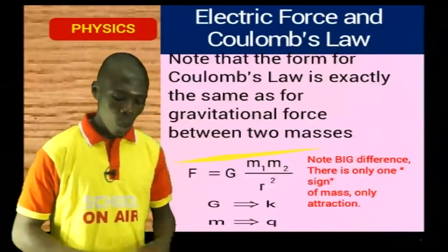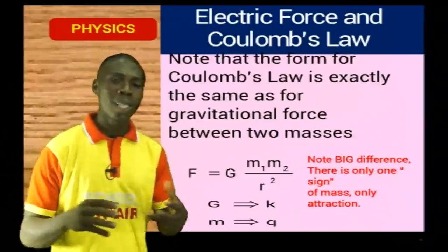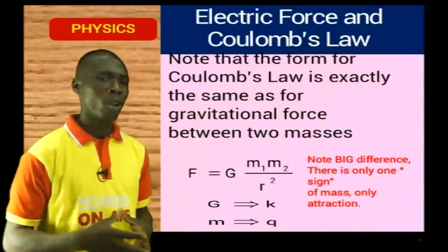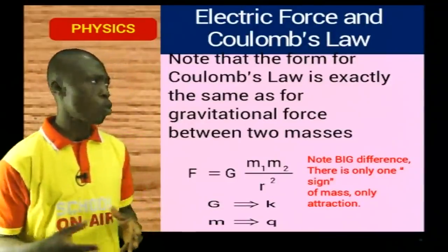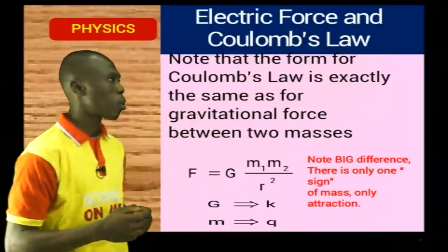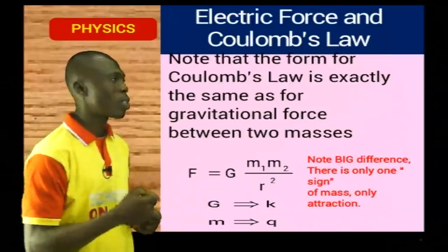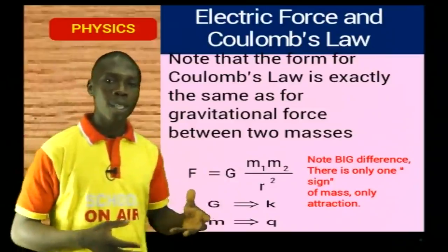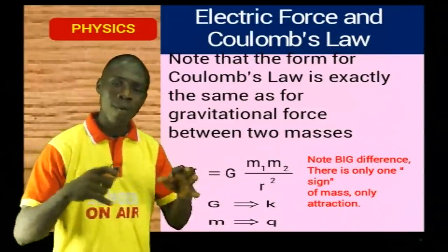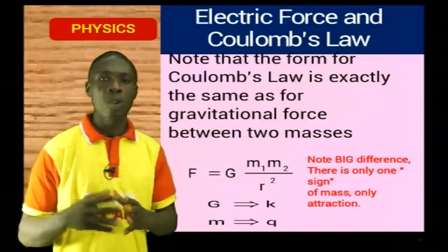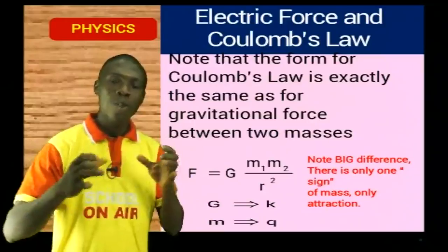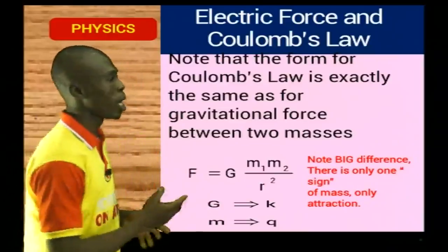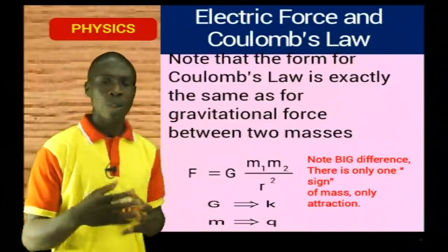Just like I was saying, there is a similarity — a likeness — between Coulomb's Law and the universal law of gravitation. You should note that the form for Coulomb's Law is exactly the same as the gravitational force between two masses. When you have two masses placed in a gravitational field, there is a force of attraction between them. According to Newton's universal law of gravitation, the force of attraction between two masses placed in a gravitational field is directly proportional to the products of the masses and inversely proportional to the square of their distance apart — very similar to Coulomb's Law.